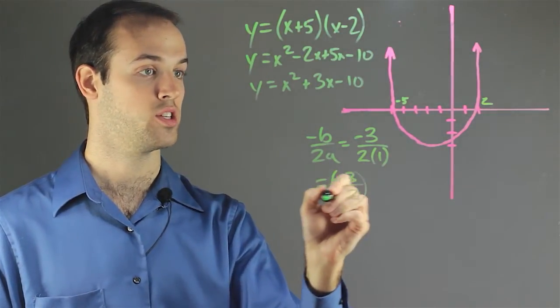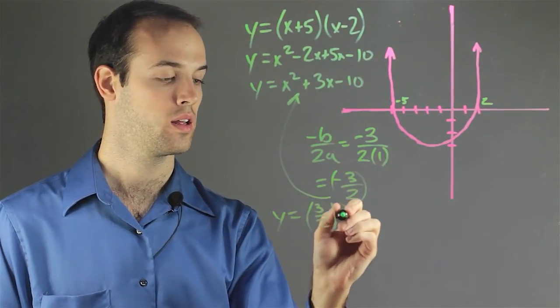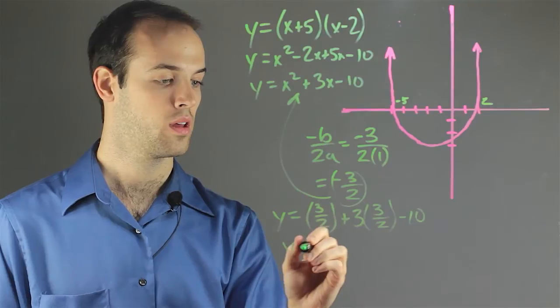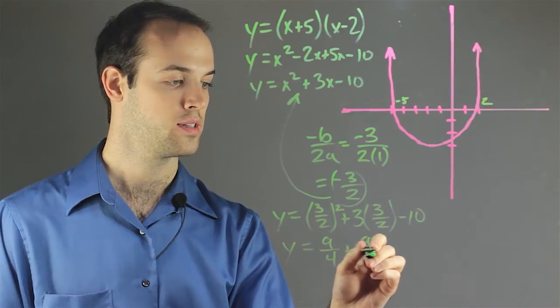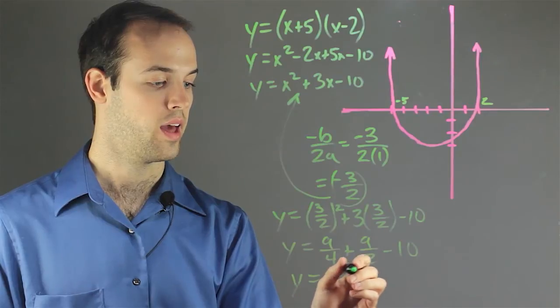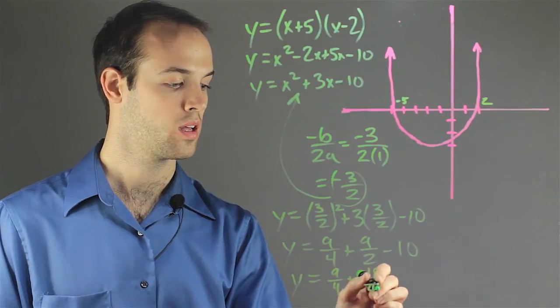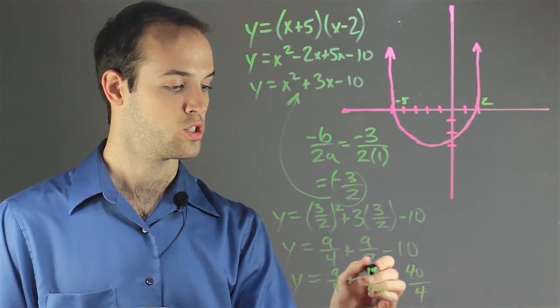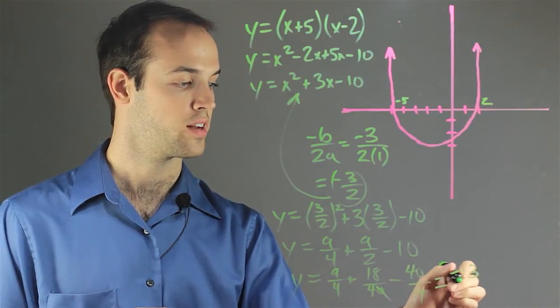Now we would plug this back into the equation to get the y value. So we'd have y equals 3 halves squared plus 3 times 3 halves minus 10. So we have y equals 9 fourths plus 9 halves minus 10. And then we would simplify that we would say 9 fourths plus 18 fourths minus 40 fourths, which this would be 27 and minus 40 would be negative 13. So we have negative 13 fourths.